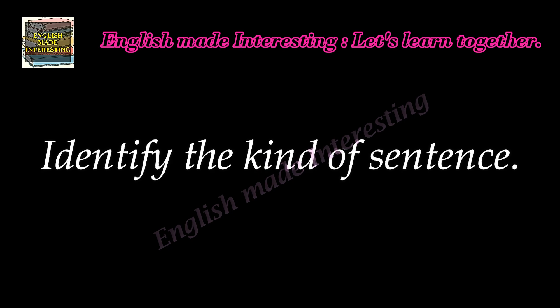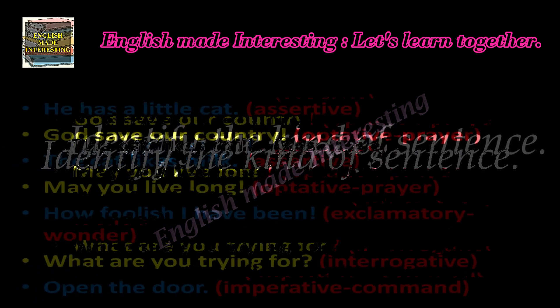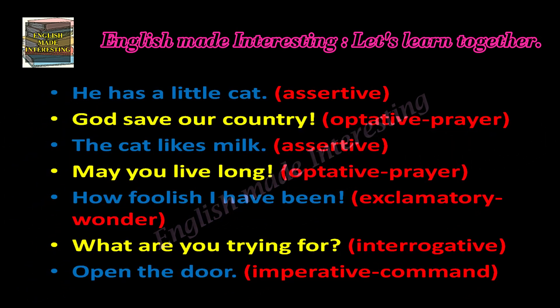Identify the kind of sentence. 'He has a little cat.' It is an assertive kind of sentence. 'God save our country.' It's an optative sentence — it's a prayer.